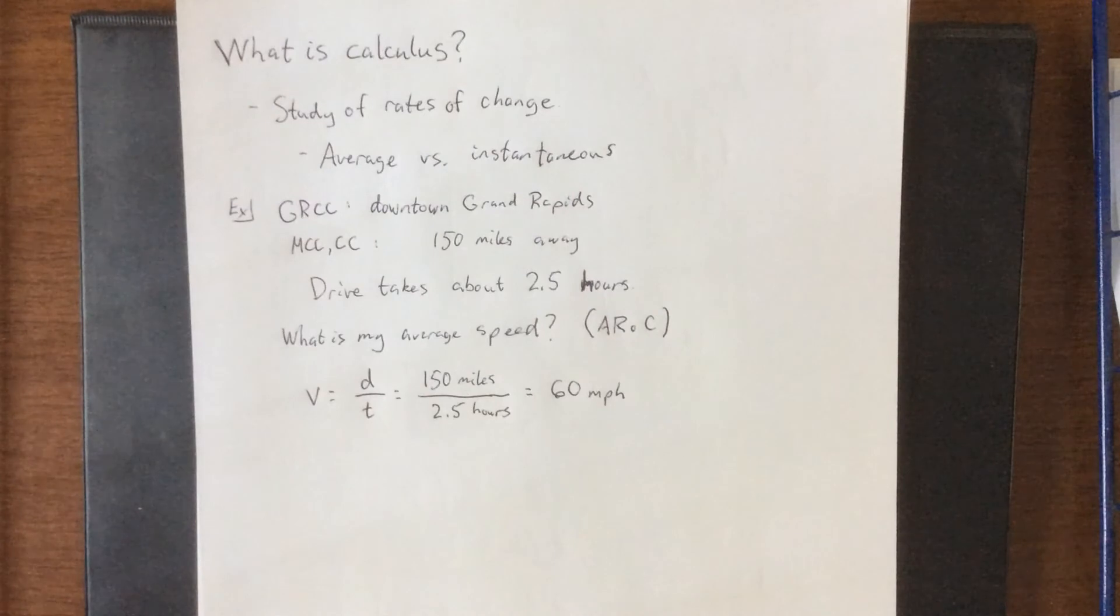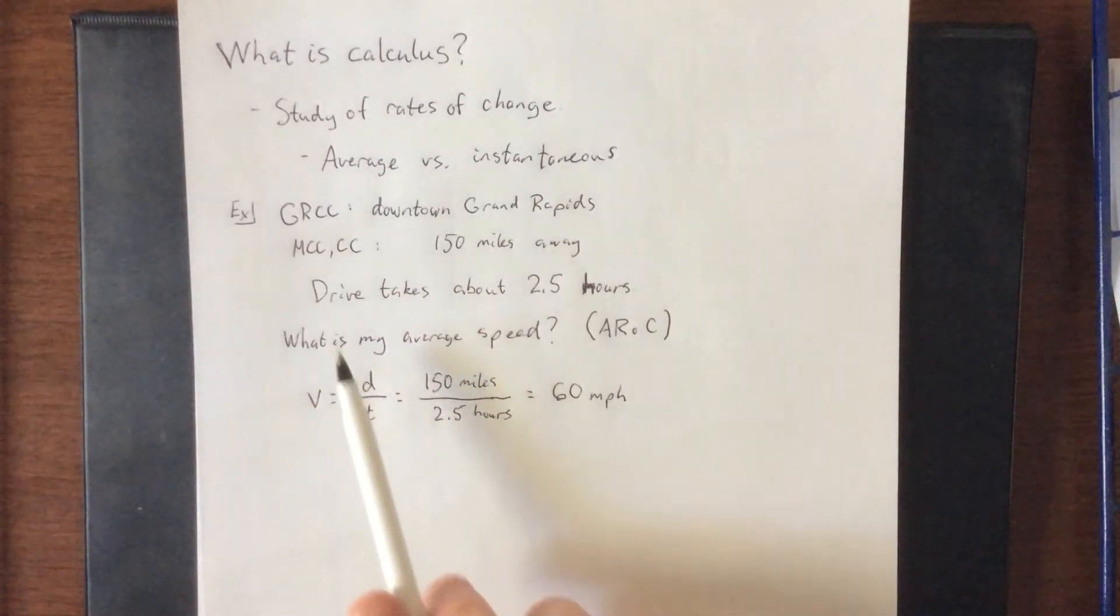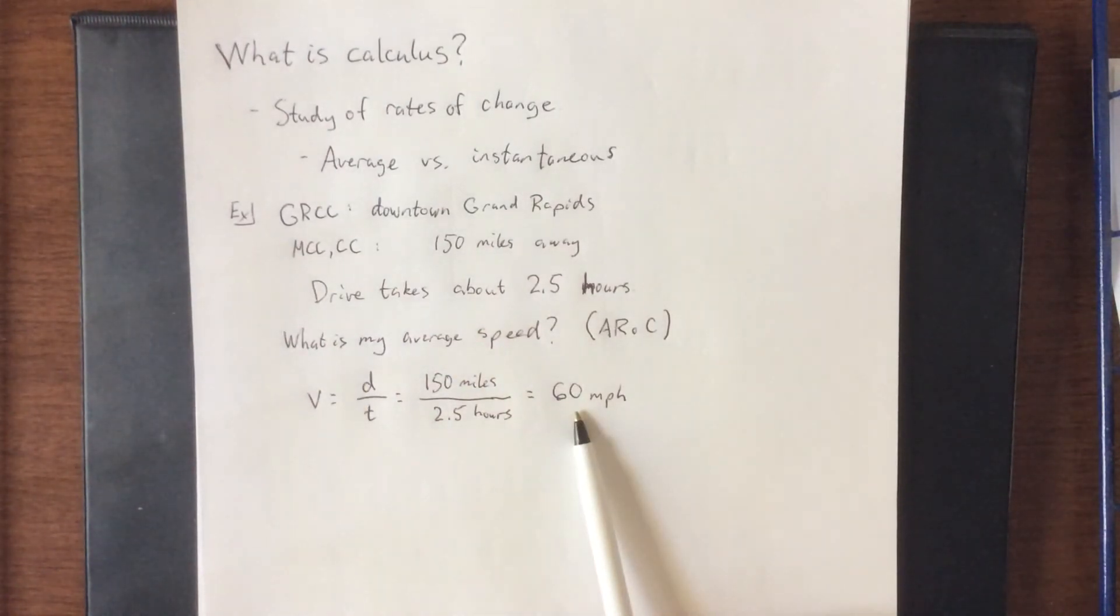Now, what does that average speed actually tell you about my driving on the way there? Basically nothing. Let's say that I'm still on MCC's campus about to drive toward downtown Grand Rapids. Am I going to be driving 60 miles an hour through the parking lots on campus? Absolutely not. That would be ridiculously irresponsible.